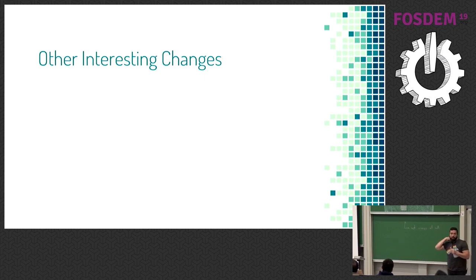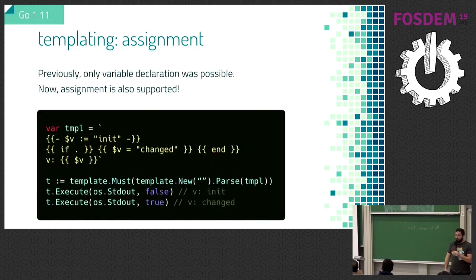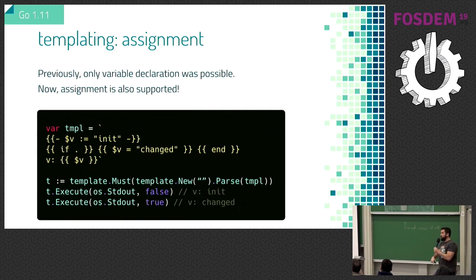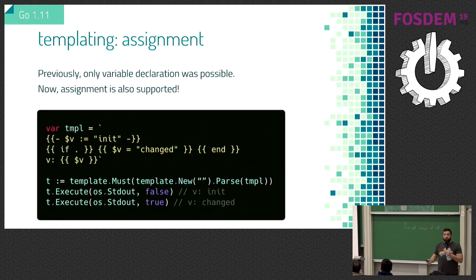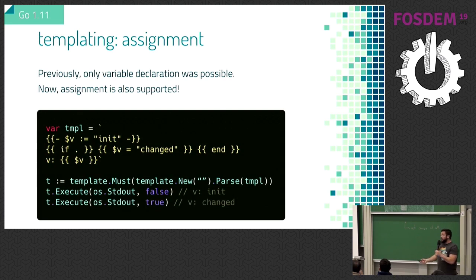Other interesting changes to the standard library: you can now assign variables in templates. Previously you could only declare variables but not change their values. Now you can do that too. For example, 'v = change' — that's something that wasn't possible before. It's quite useful for debugging templates: you can have something at the beginning that says 'if debug, change these variables to something else.'